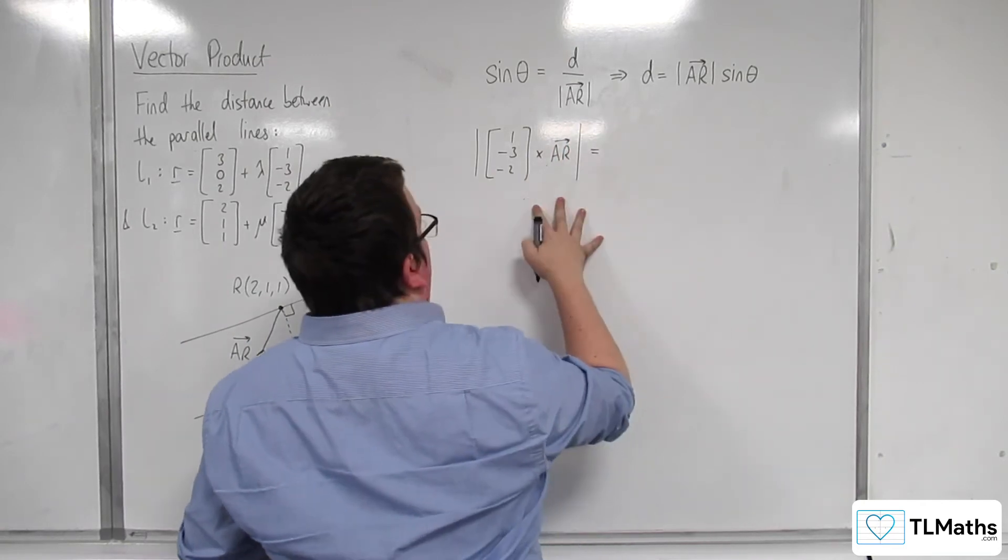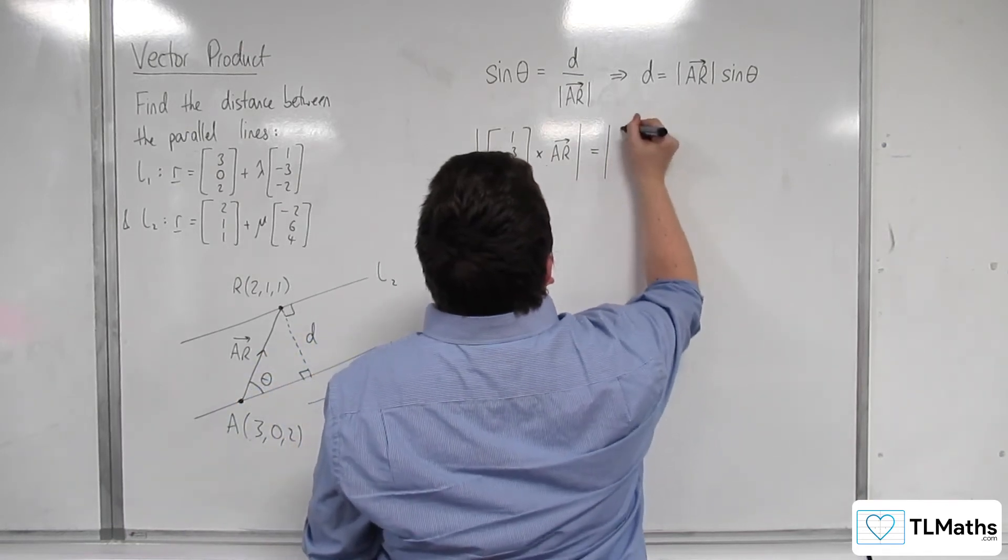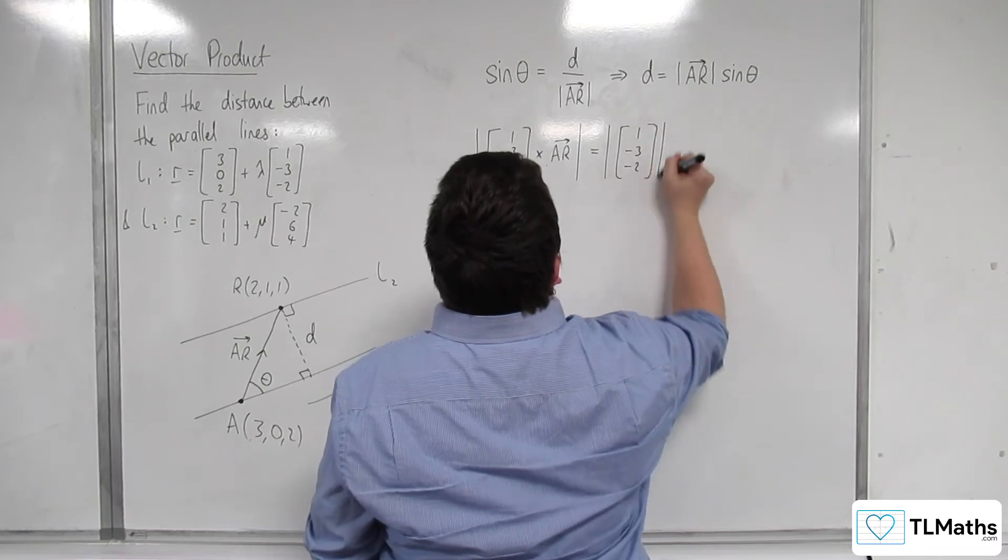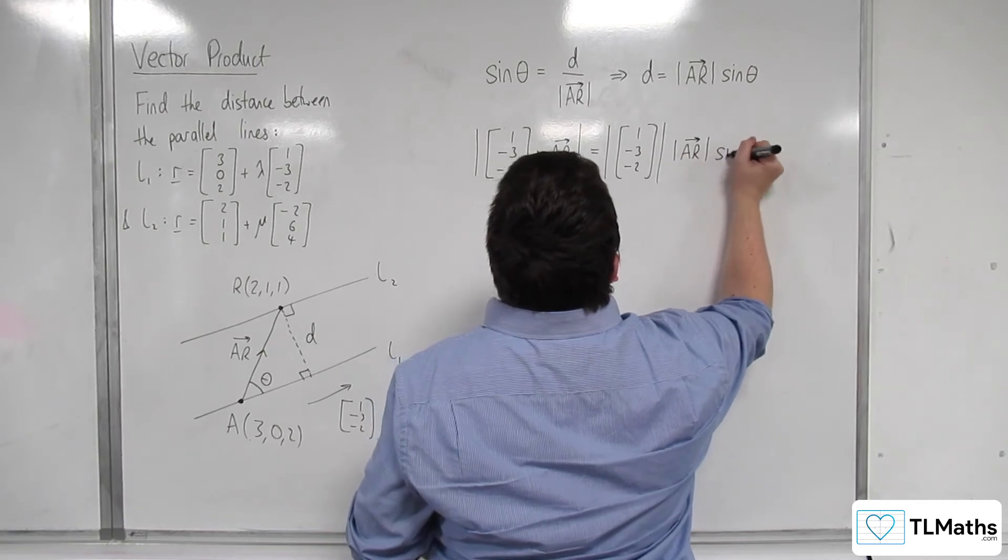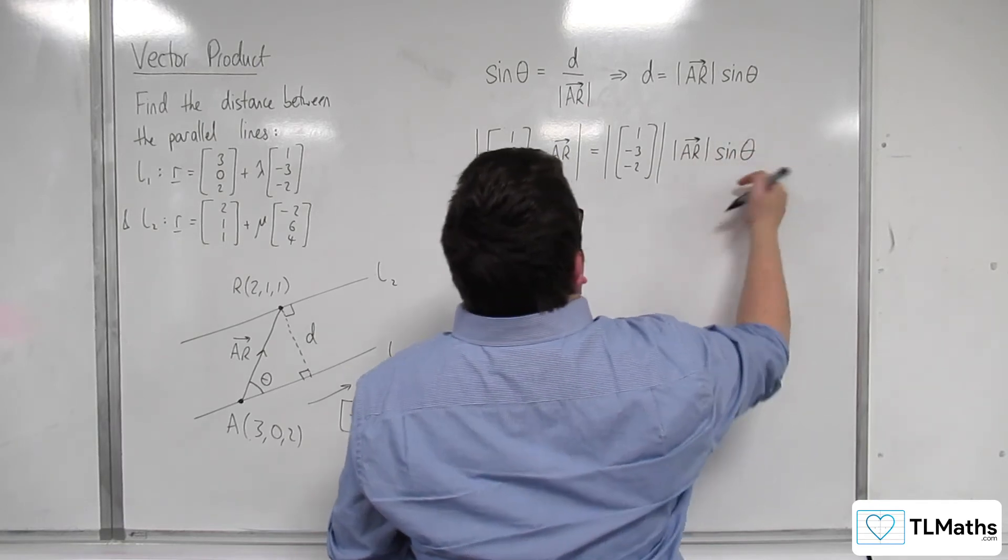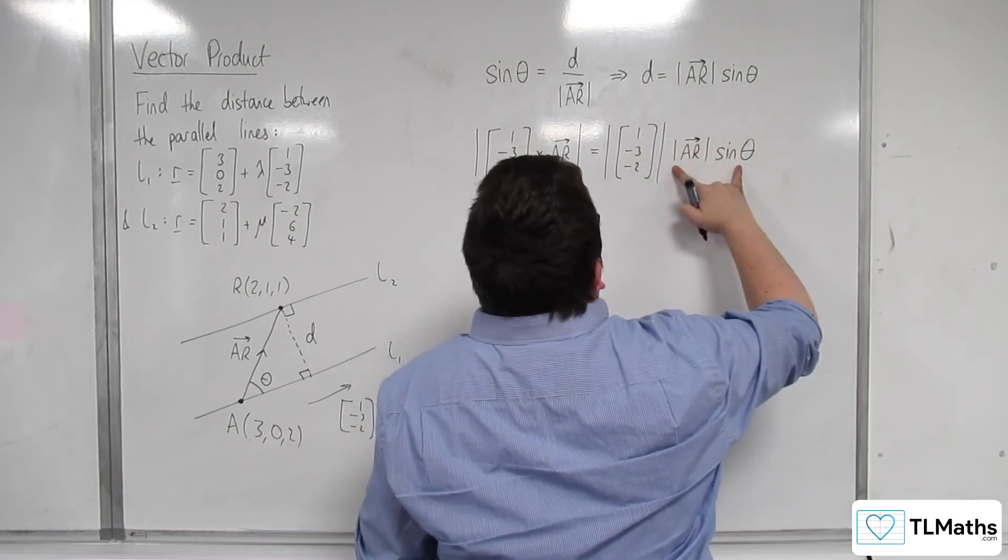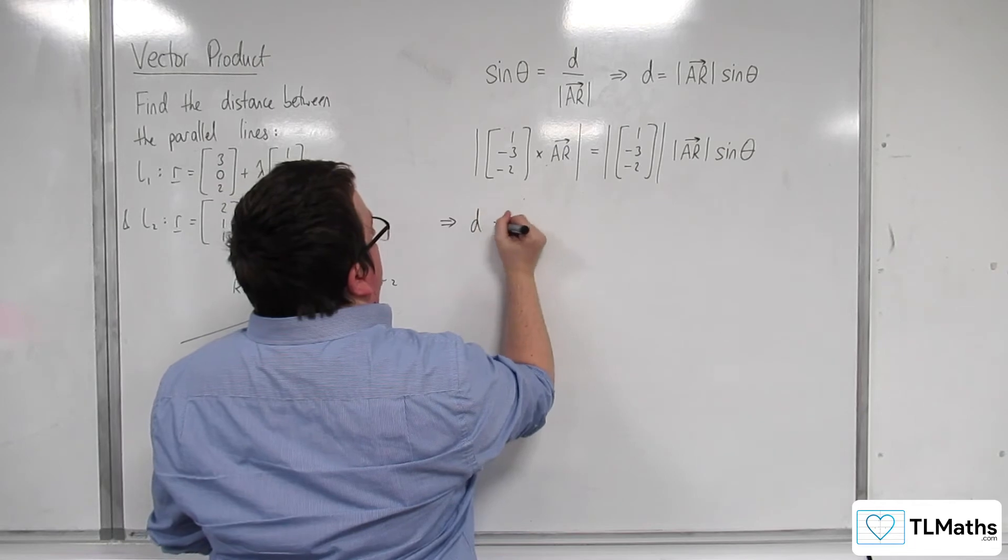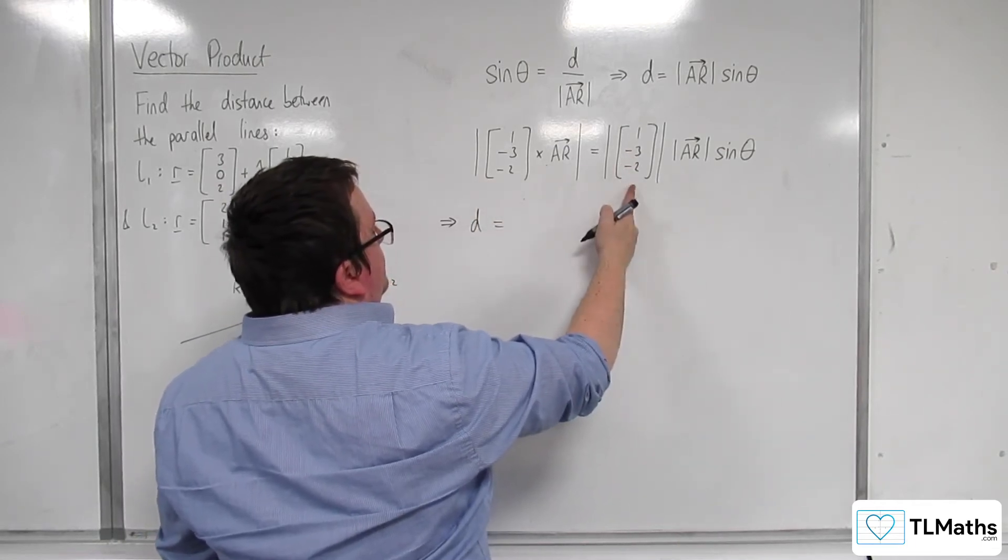So the length of AR has got to be equal to the length of 1, minus 3, minus 2, times the length of AR times sine of the angle. And of course, that is precisely what I've got here. So that's D. So I can then say that D must be equal to that, divided by that.